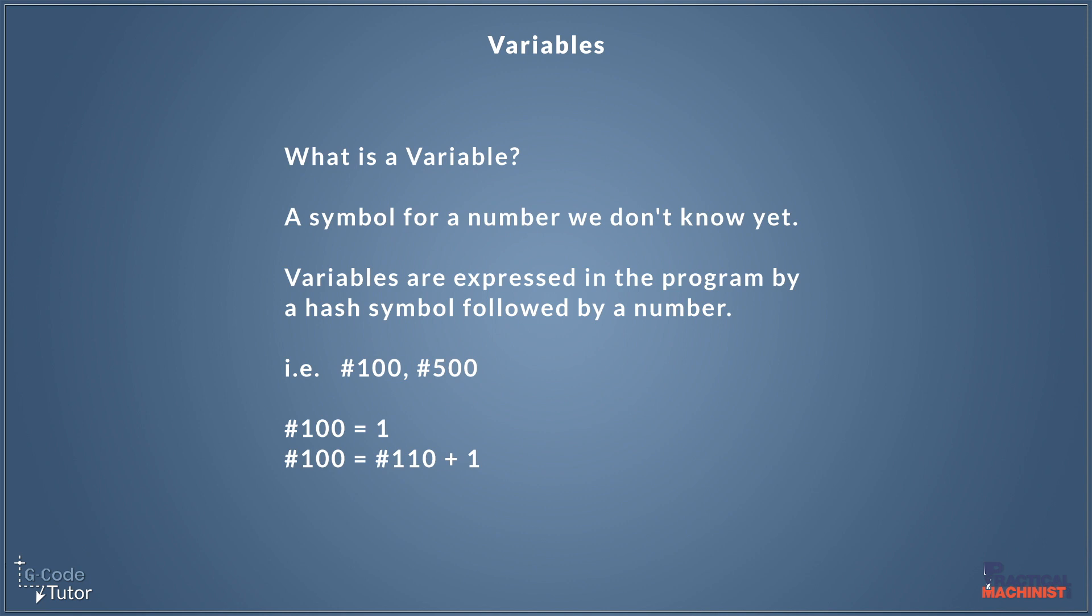And we might use something like this, for example, to count cycles. So we could say hash 100 equals hash 110 plus one. And we could add that to the bottom of each block of program. So it adds one to the variable 100 every time it gets to that point of the program. So that's just one very basic example of a use we may have for this.